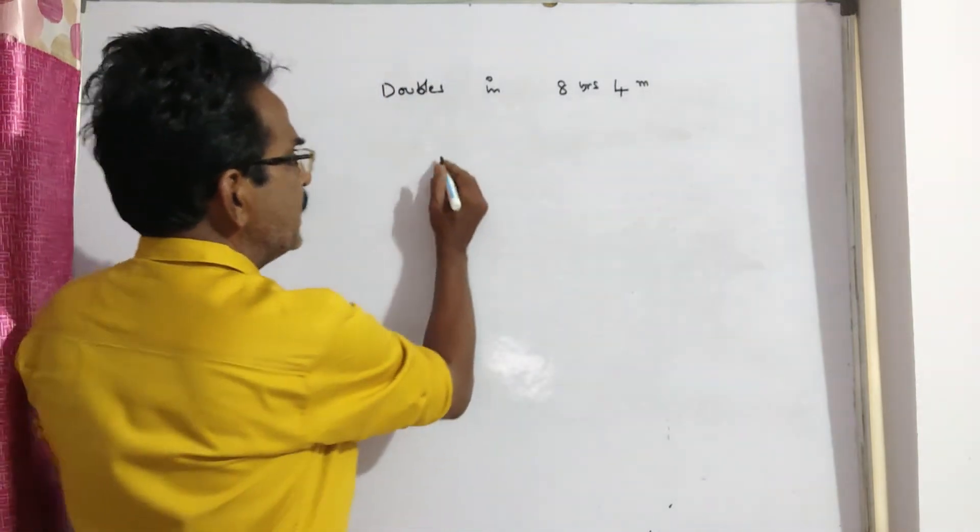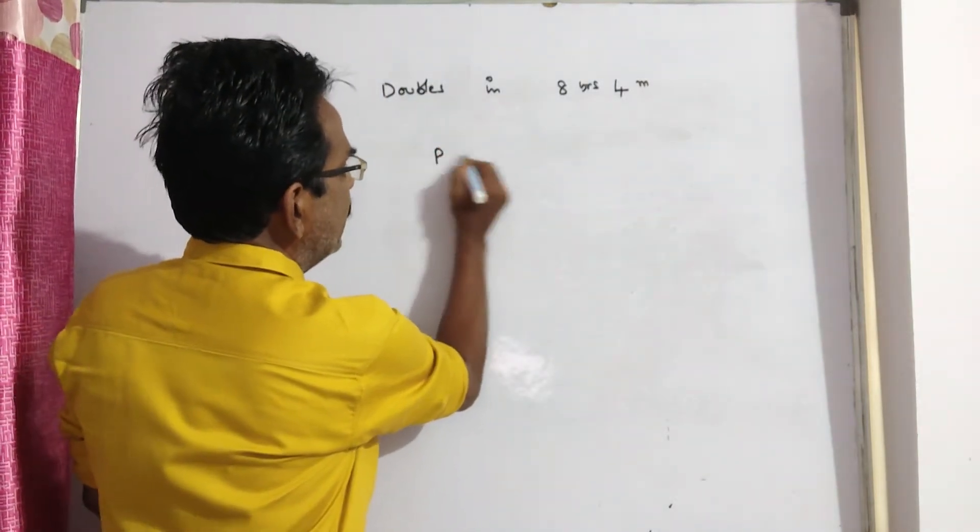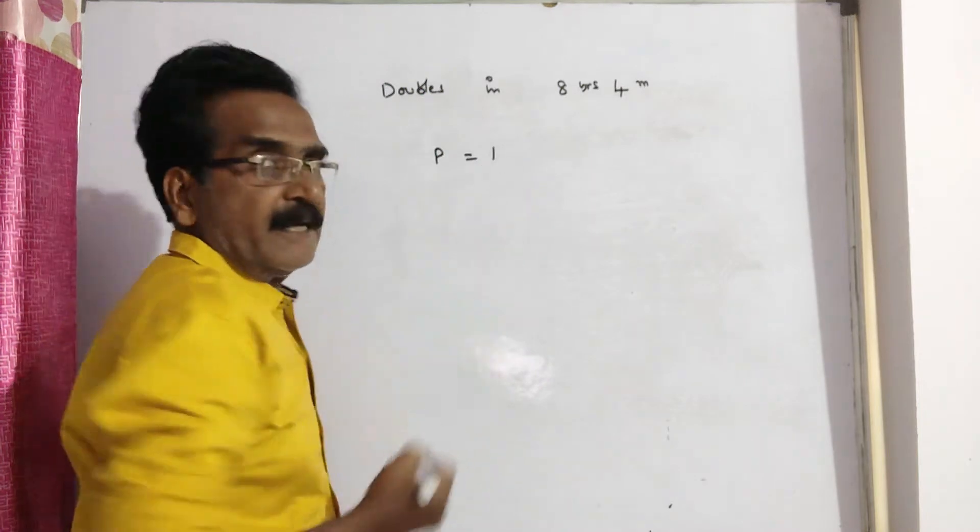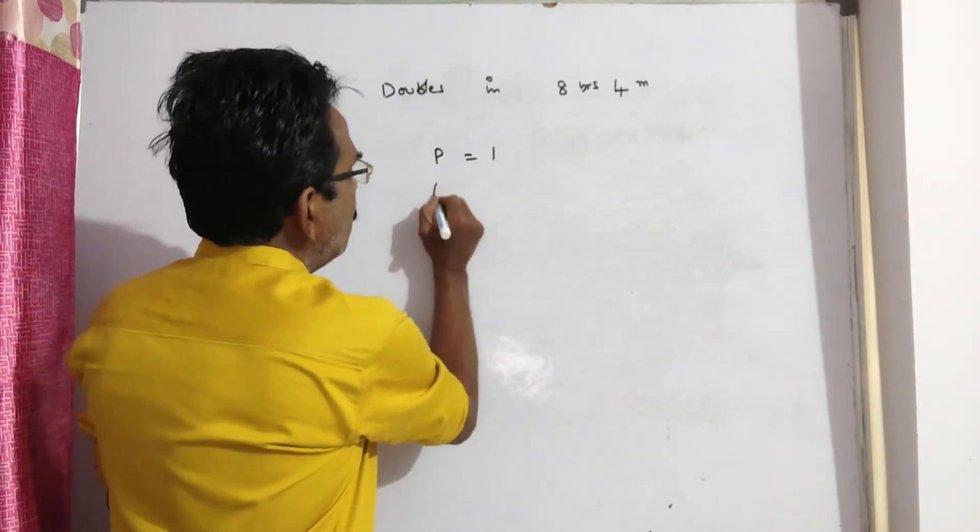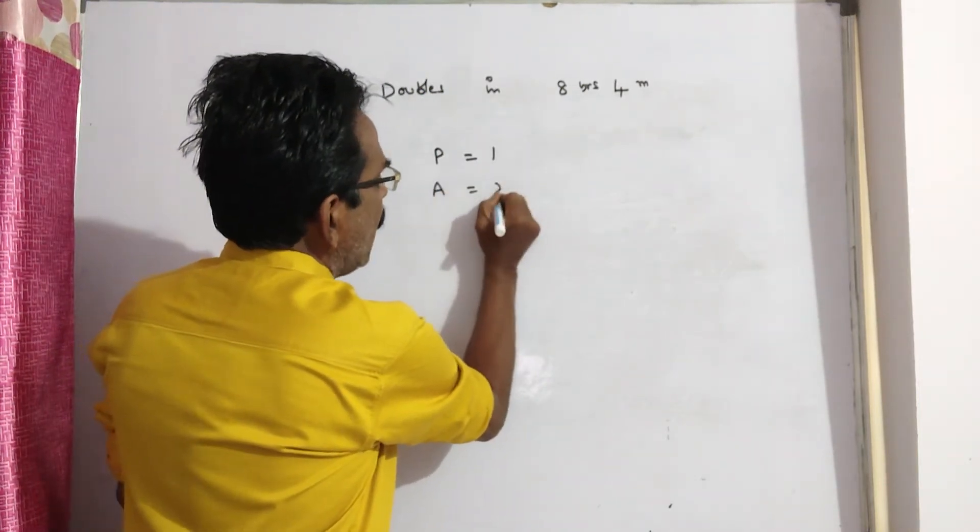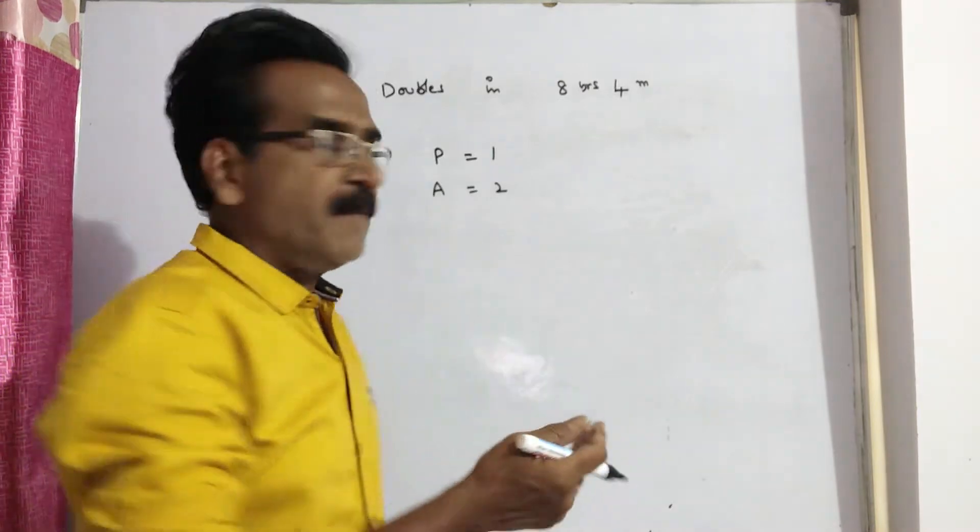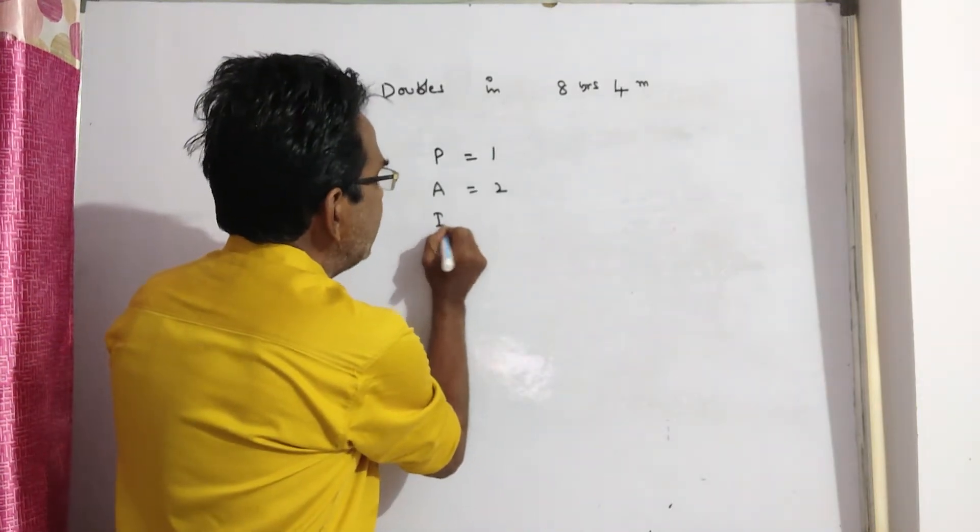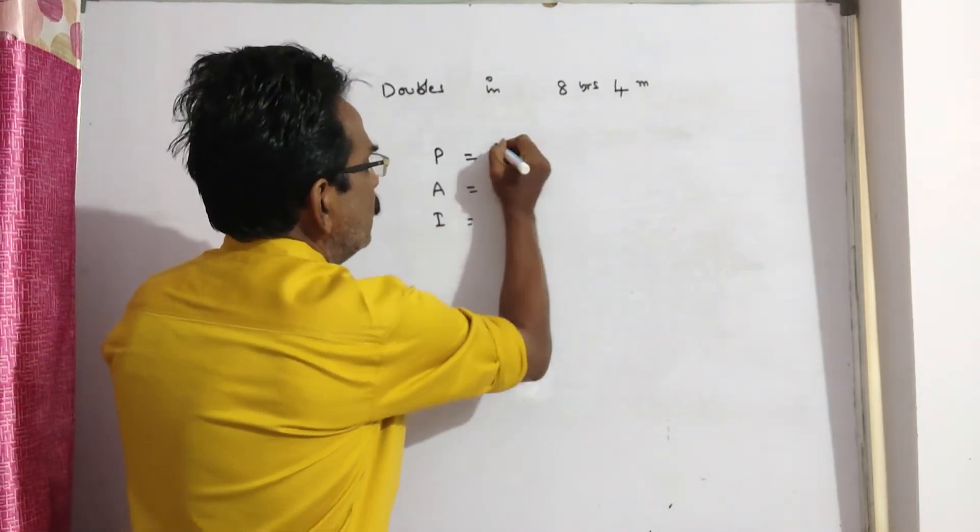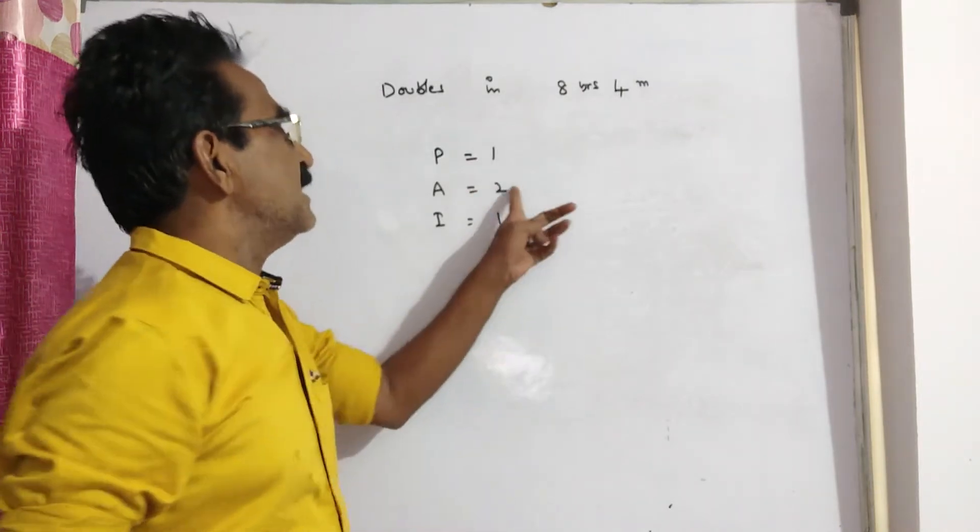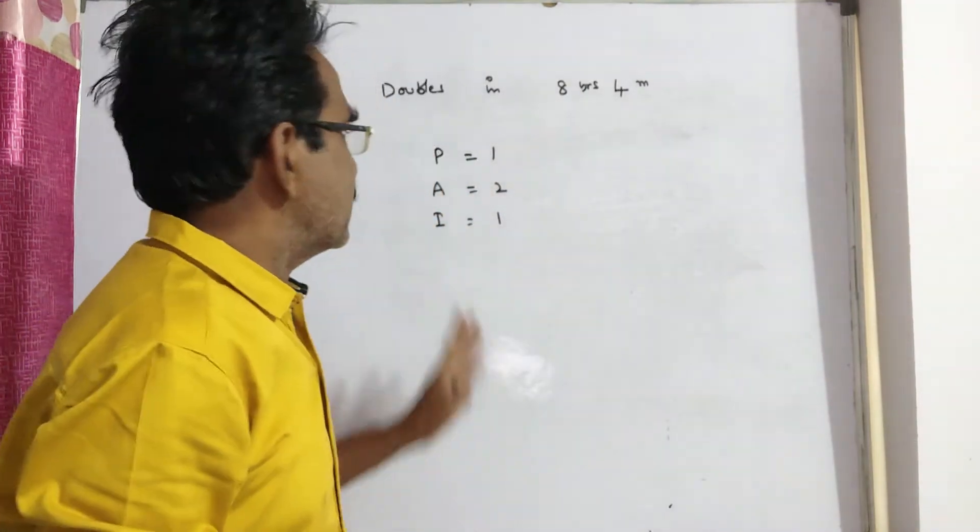Friends, doubled means if principal is equal to 1, amount is 2. It is doubled. Now, interest is equal to 2 minus 1, that is amount minus principal gives interest.